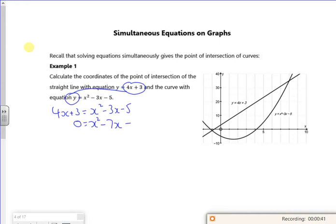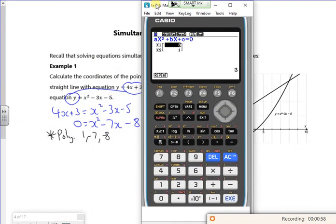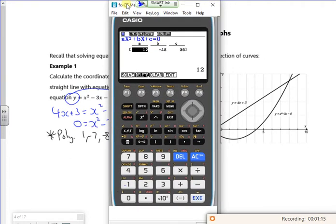So I've got x squared minus 7x minus 8, and then I'm just going to use factorization. So I'm going to put 1 minus 7 minus 18. Let's see if I can get it up there. So x is 8 or x is minus 1.